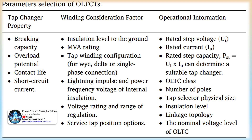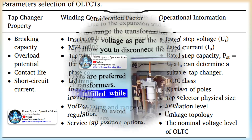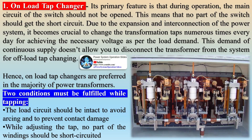When tap changing, only half of the reactance that limits the current is connected in the circuit. For off-load (no-load) tap changers, the taps can be changed only after completely isolating a transformer from the circuit. This kind of changer is generally installed on a distribution transformer, and tap changing can be carried out only when the transformer is in an off-load or no-load condition.